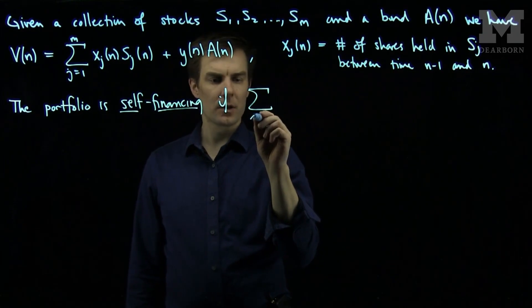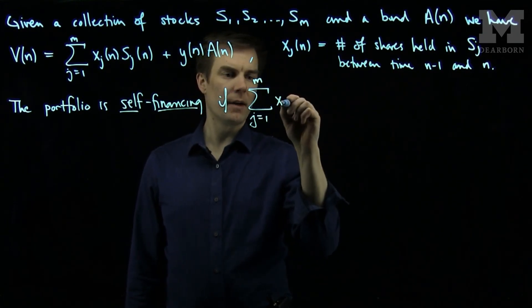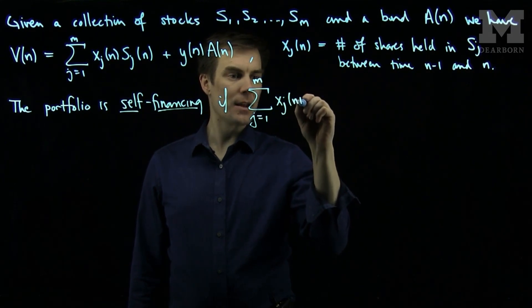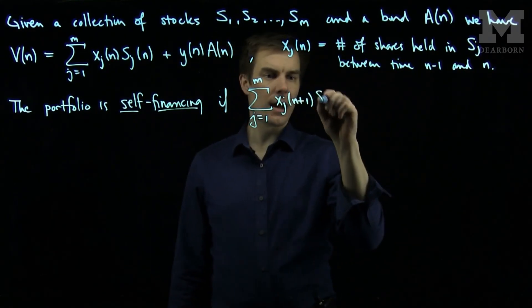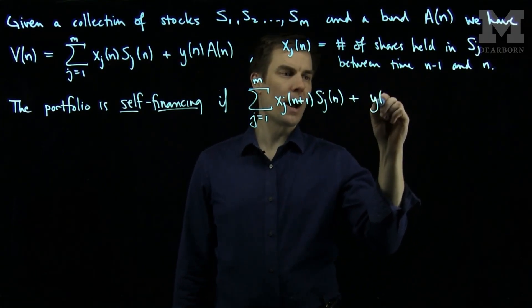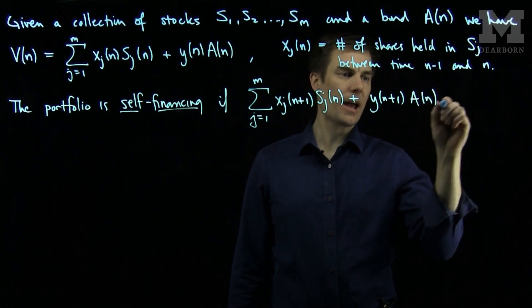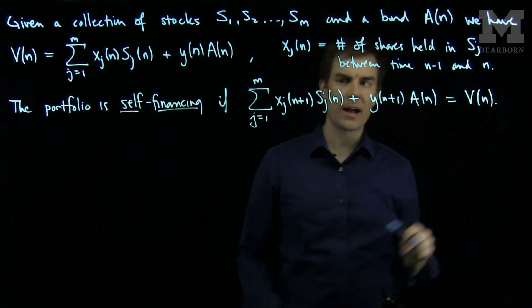the sum, j goes from 1 to m, of x_j(n+1) s_j(n) plus y(n+1) A(n) is equal to V(n).